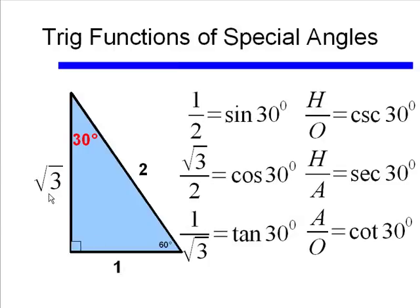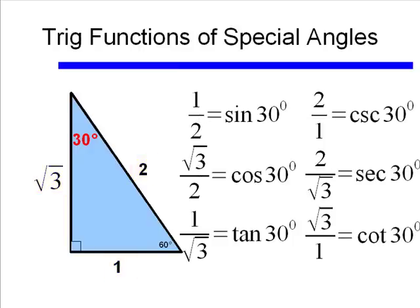So that's going to change our sine, cosine, tangent functions, as well as the other three. The sine of 30 degrees is opposite over hypotenuse, or 1 over 2. The cosine of 30 degrees is square root of 3 over 2, and the tangent of 30 degrees is 1 over square root of 3. Our cosecant of 30 degrees is 2 over 1, our secant of 30 degrees is 2 over square root of 3, and our cotangent is adjacent over opposite, or square root of 3 over 1.